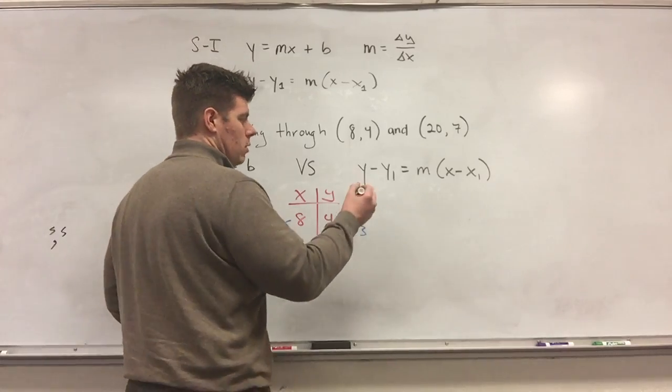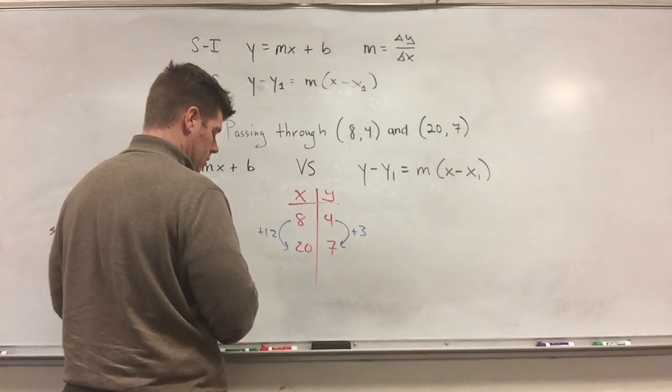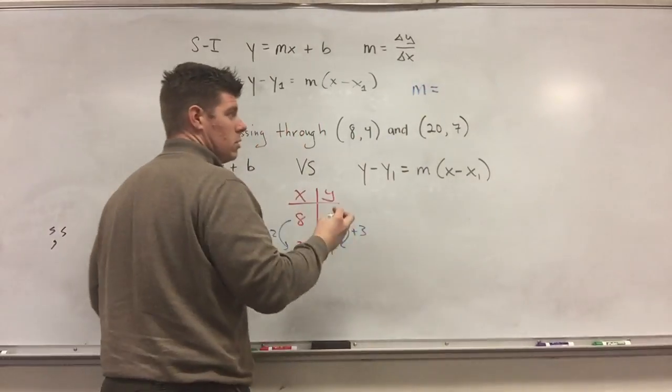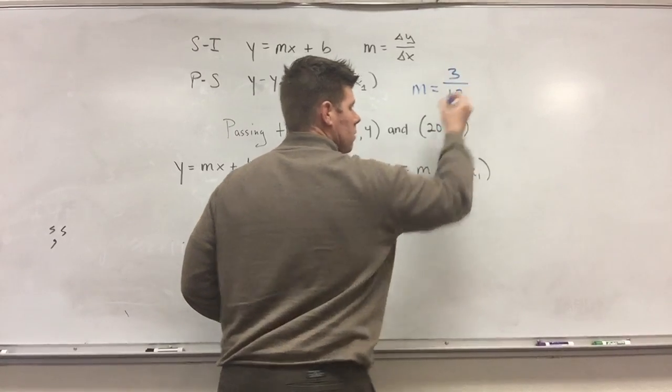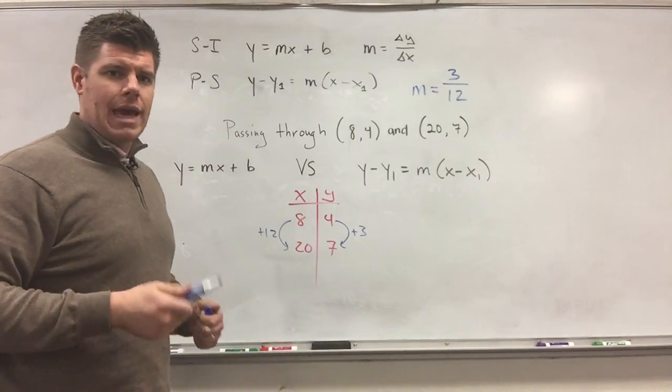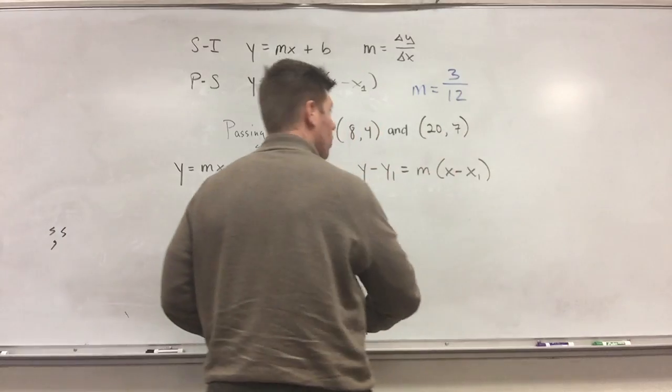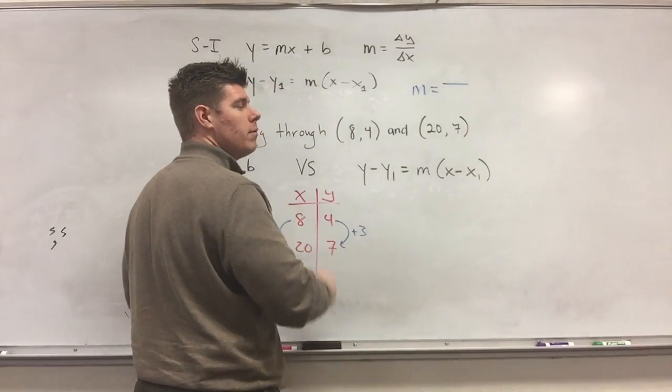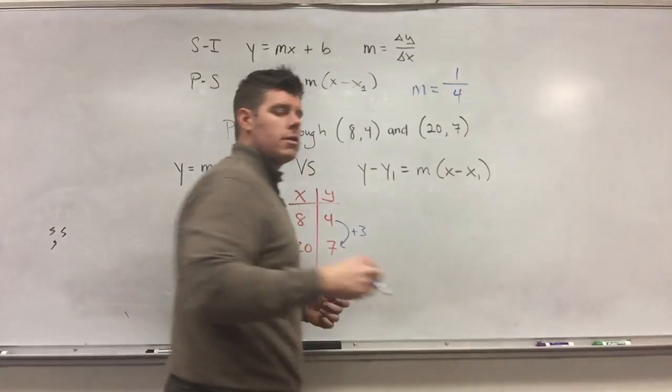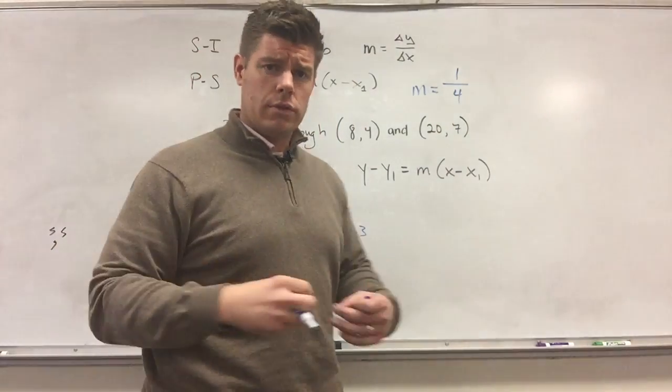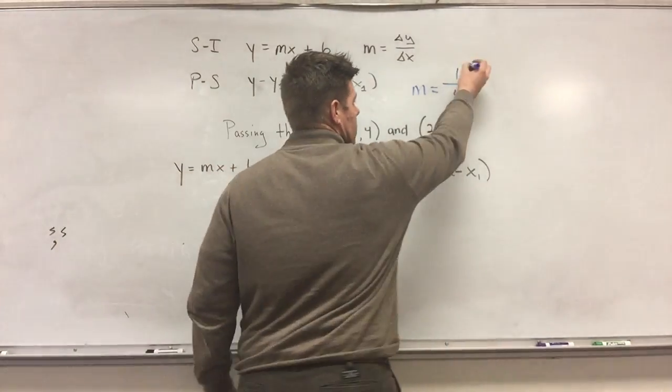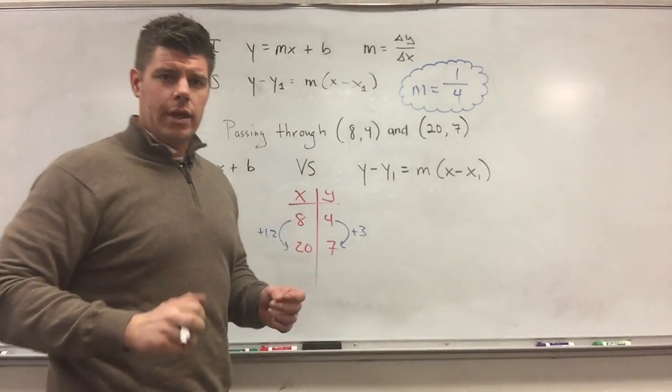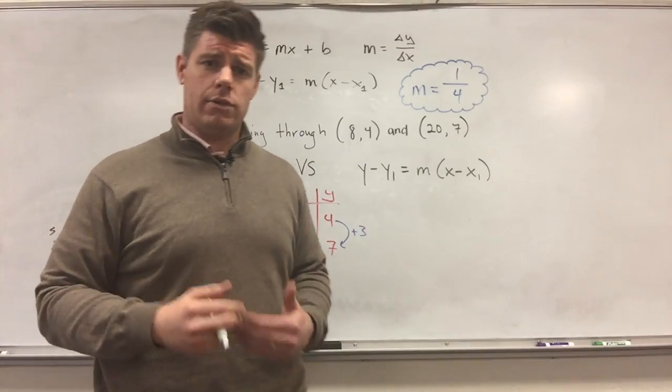So the ratio that I have is the change in y's over my change in x's. So m, I'm just going to record this off to the side up here for me to use later. So I now know that m is going to be equivalent to 3 over 12. Now, I can reduce this, and that reduces to 1 fourth. So 3 over 12 reduces to 1 over 4, because 3 is divisible by 3, and 12 is divisible by 3.